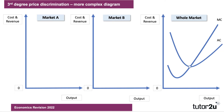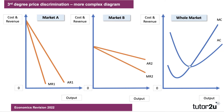For example, market A could be commuters or business users. Market B could be students or pensioners — different groups of consumers. Now, in one market you have a fairly inelastic demand — market A. And in another market, market B, you have a much more price elastic demand. Consumers are much more price sensitive in that one. Make your elasticities very different — it'll help the analysis.